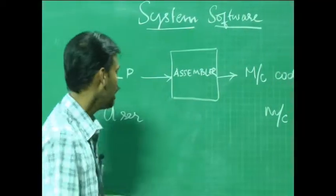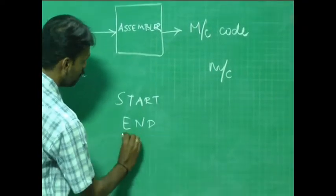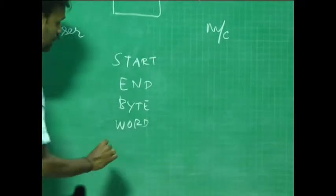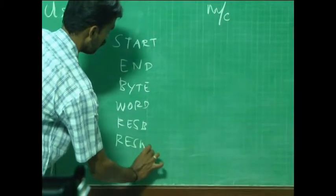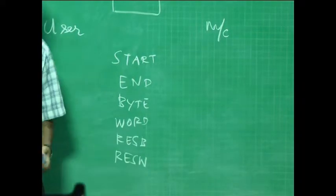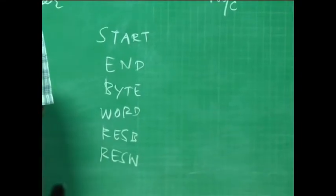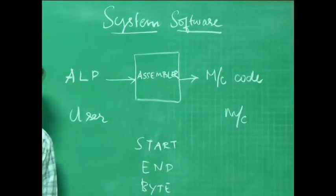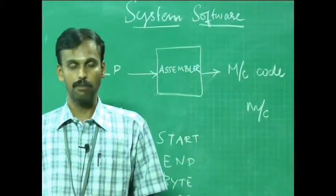START marks the beginning of the program. We also have END, BYTE, WORD, RESB for reserve byte, and RESW for reserve word. Using mnemonics and these assembler directives, we can create a program that can have a header, a text section, and an executable section — constituting an entire assembly language program. We are just interested in knowing what an assembler is and what its functions are.